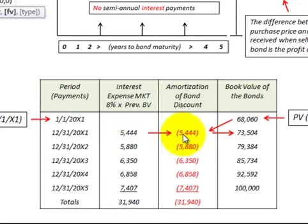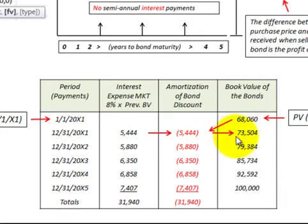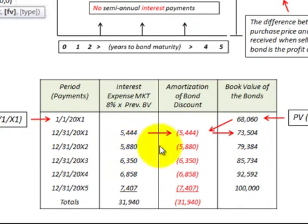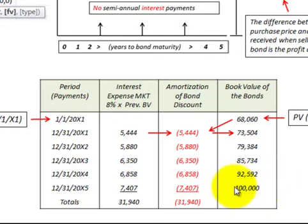That $5,444 is the amount that we amortize on this discount bond. We add this amortization amount to the book value and then we have a new carrying value for the beginning of the second year. We repeat this process taking the market rate of interest times the beginning book value to get the interest expense for that year, continuing through the amortization schedule. At the end of the fifth year, the maturity value and book value would be equal at $100,000, and our total interest expense would be $31,940 over that five year period.